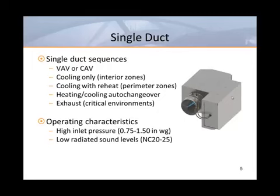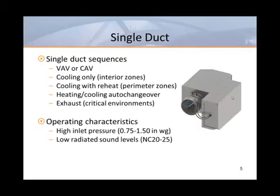If an air handler only supplies cooling, interior zones will use cooling only units while the perimeter zones would most likely use some sort of heat. In this situation, any heat located at the box would be reheat. The box controls could also be used to operate auxiliary heat, such as a thin tube heater or a radiant panel. When there's heat in the air handler, it may be necessary to provide auto-changeover controls so that the box can reverse its operation to provide both VAV heating and VAV cooling.